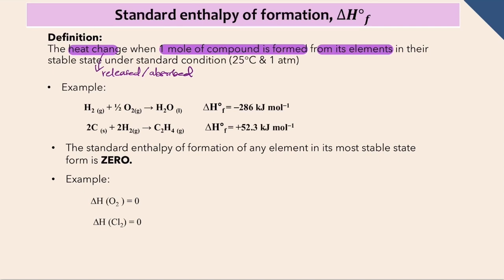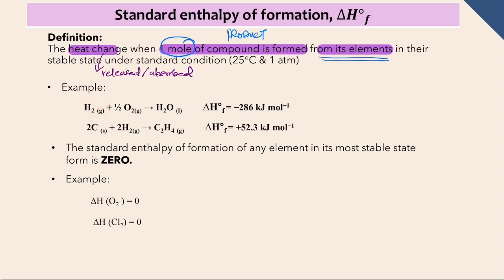We are talking about the product for standard enthalpy of formation, formed from its element — the most stable element. Let's look at the example: enthalpy of formation for water. One mole of water is formed from its elements, which are hydrogen and oxygen. For standard enthalpy of formation, one mole of product (one mole compound) must be produced from its most stable elements, which are hydrogen and oxygen.